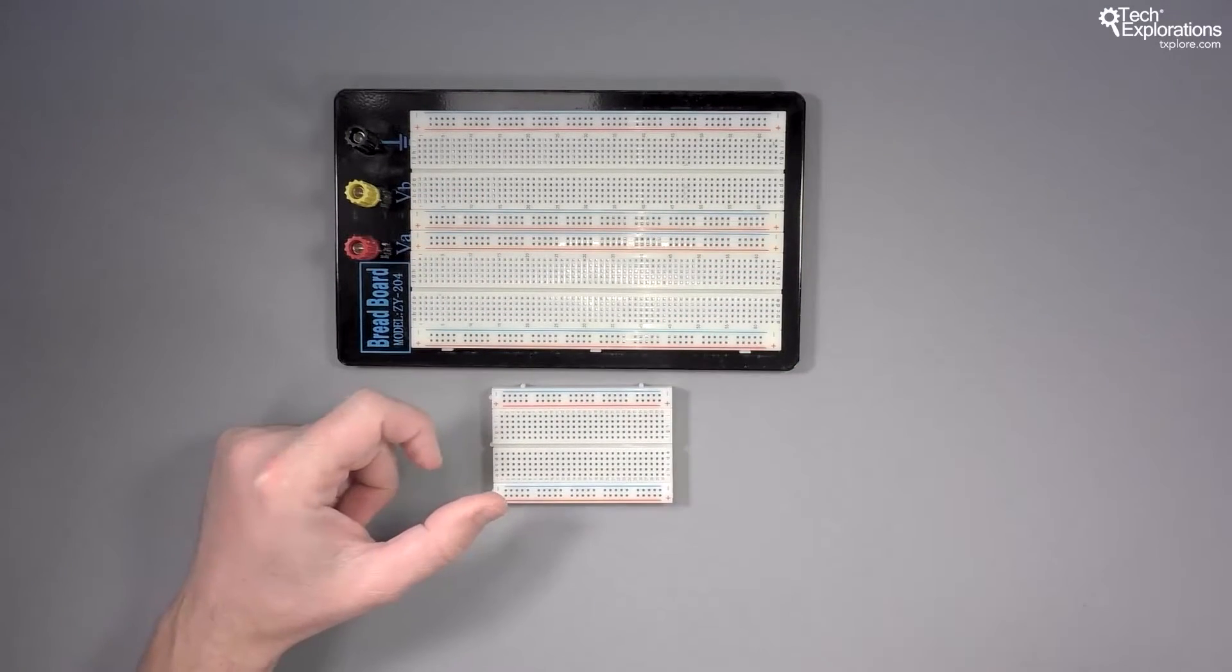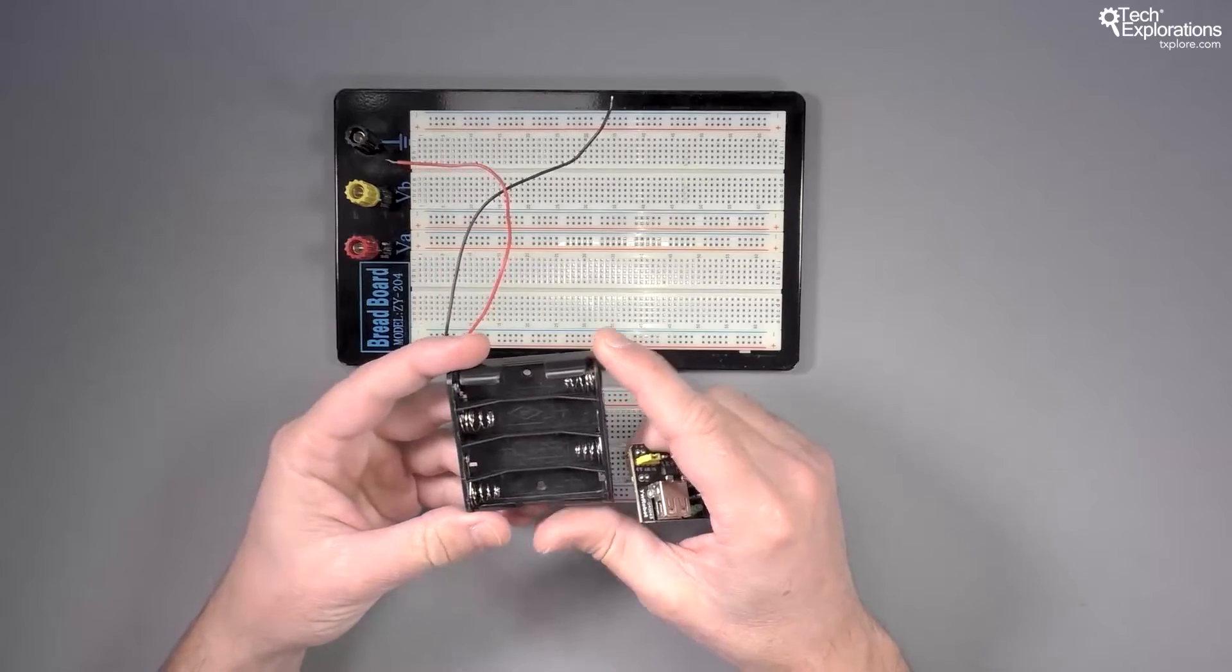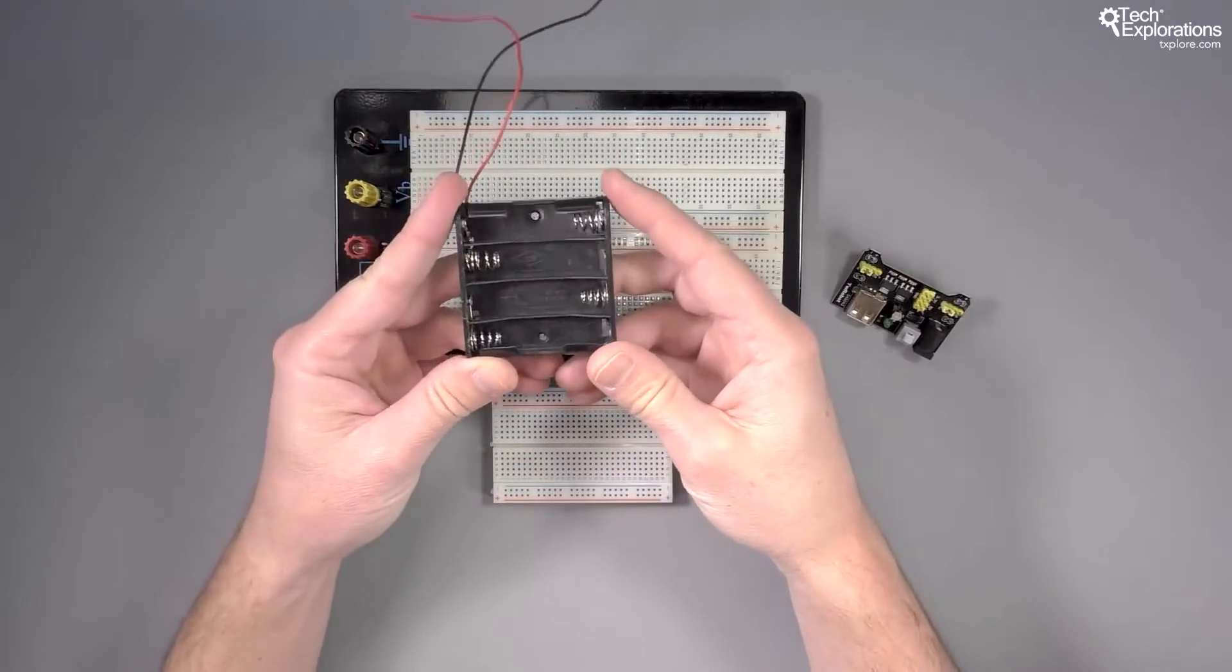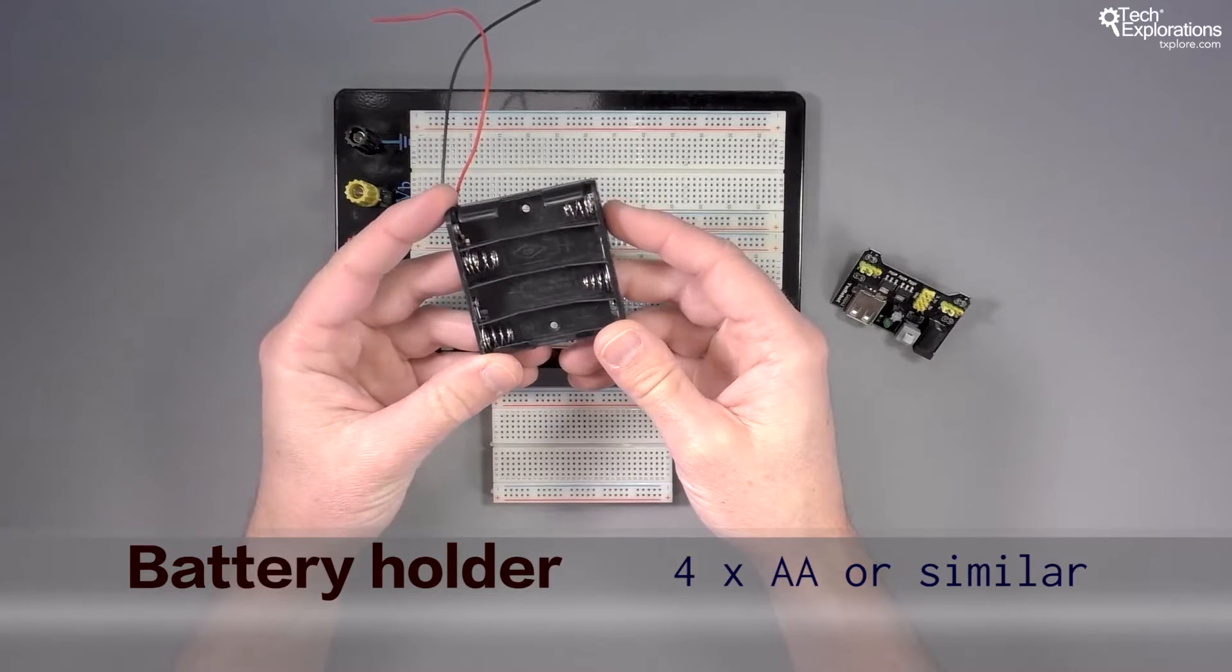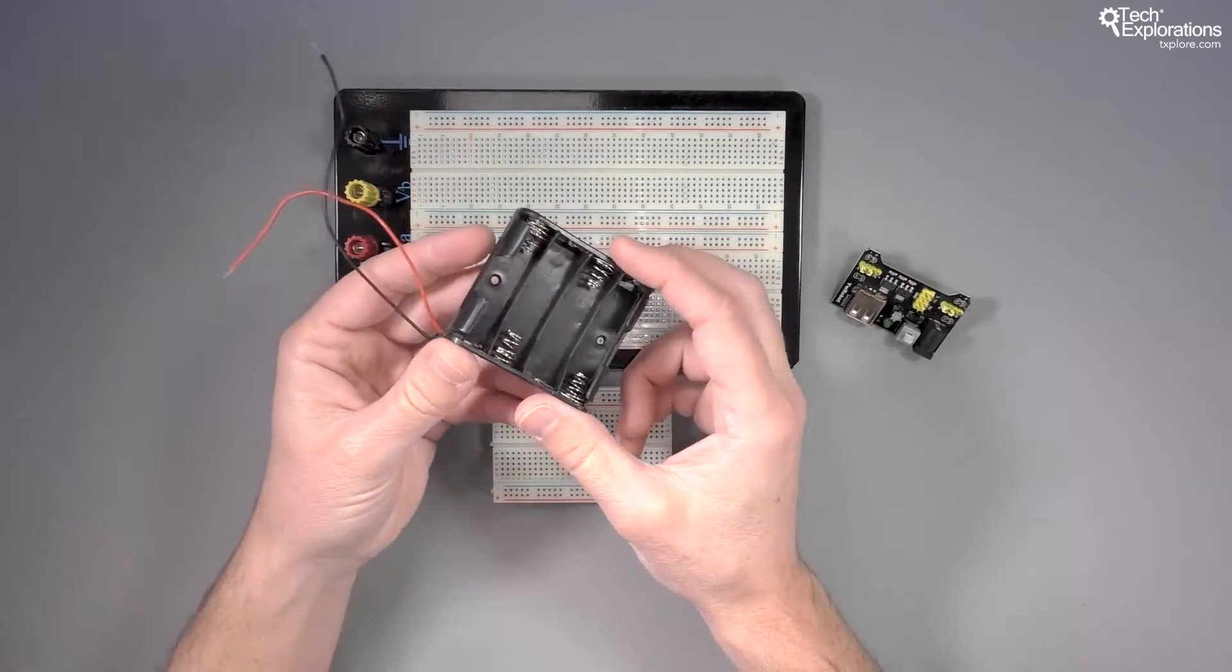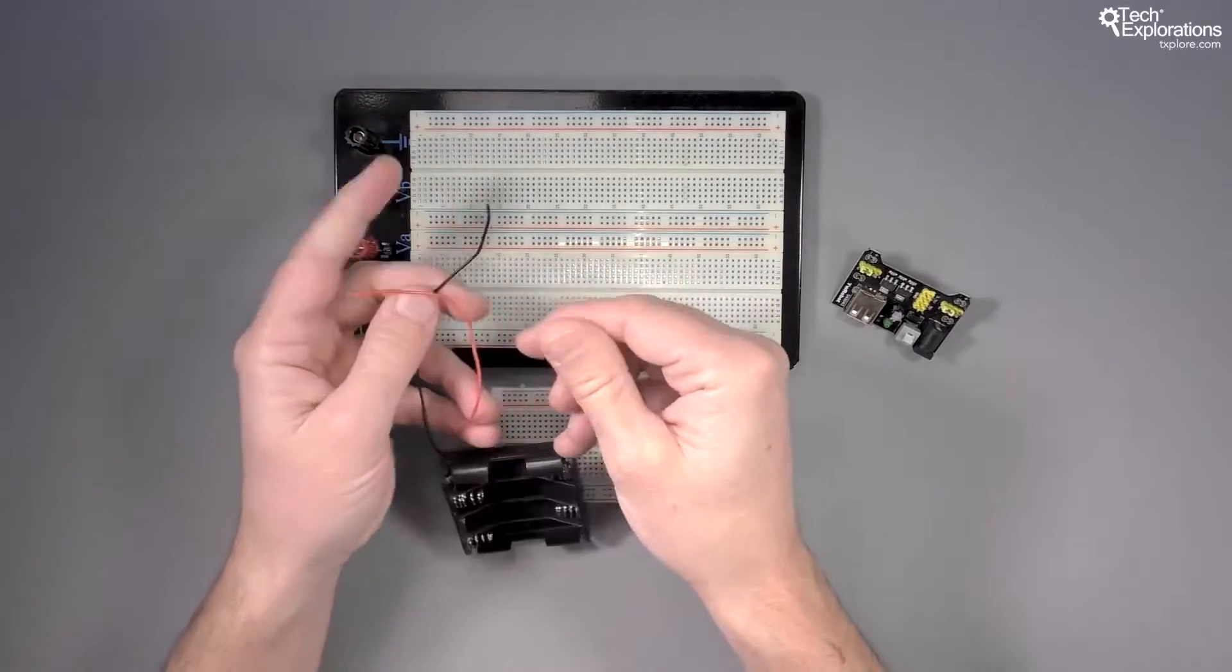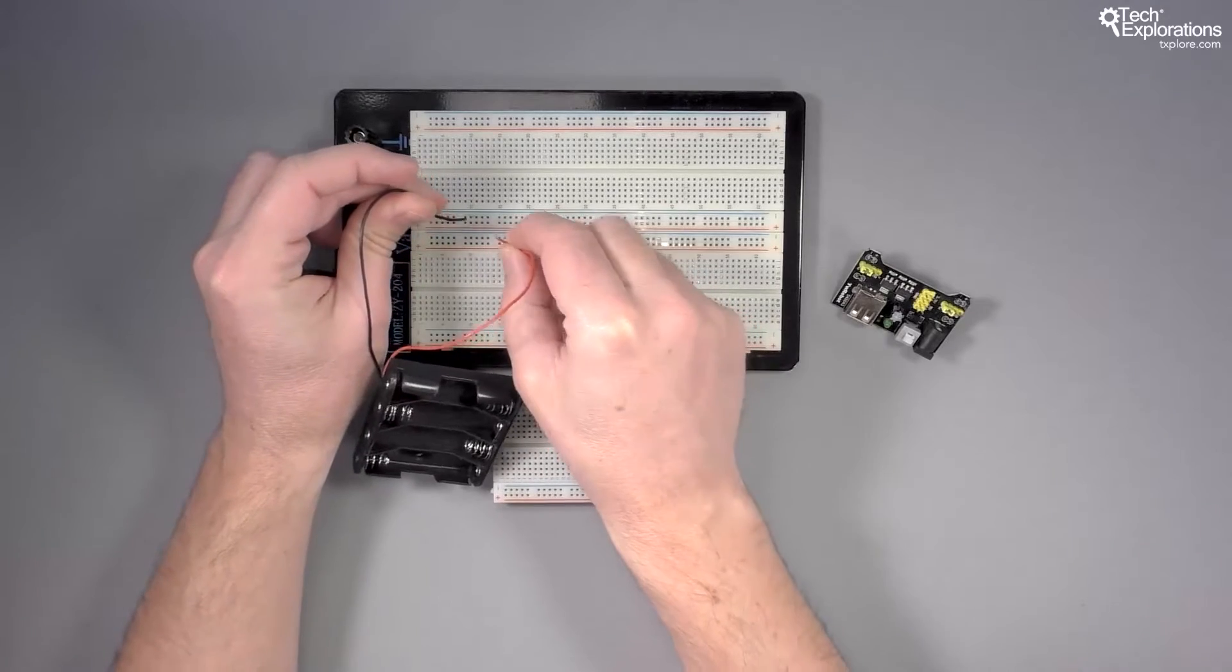Once you've got your breadboard sorted, you need to figure out what your power supply is going to be like. You've got a few options here and you can choose whichever you have handy or feel more comfortable with. You can go with a battery pack like this one, so a bunch of AA or even AAA batteries, or even a 9 volt battery will do. Just connect the leads to your breadboard and you're good to go.